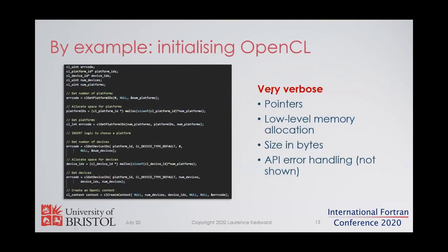On this slide I'm showing what the original OpenCL C API looks like for initializing OpenCL. It's quite heavily dependent on pointers and involves a lot of low-level memory management. Not shown here is API error checking, which is required after every single API call. This is what we're attempting to simplify.